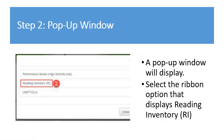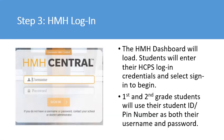After selecting the HCPS online testing tile, a pop-up window will appear. Select the ribbon that displays Reading Inventory, or RI, and click on that ribbon. The next step will be the HMH login page.